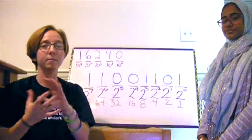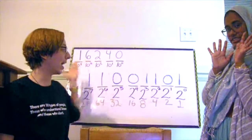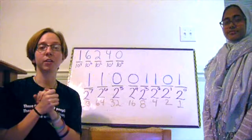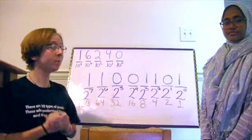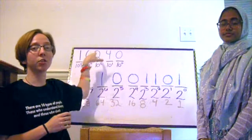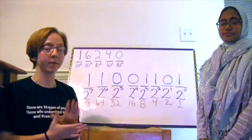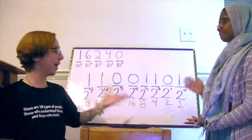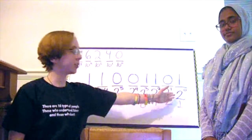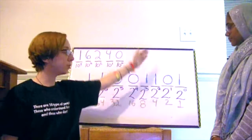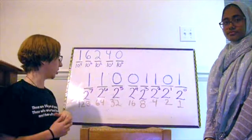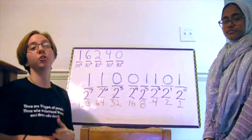Like how the decimal system uses powers of 10, the binary system uses powers of 2. Up here in our number 1640 written in decimal, we have 0 tens to the 0s, or 0 1s, 4 tens, 2 hundreds, and so on. Down here in this lovely binary number 11001101, we have 1 2 to the 0, or 1 one, 0 twos, 1 four, 1 eight, 0 sixteens, 0 thirty-twos, 1 sixty-four, and 1 one-hundred-twenty-eight.